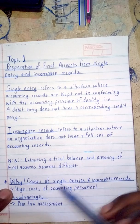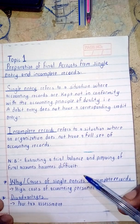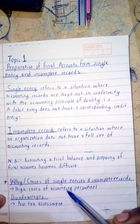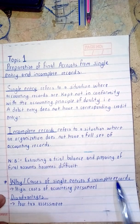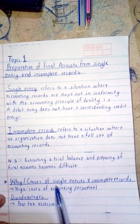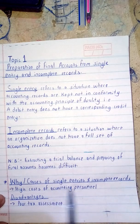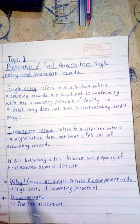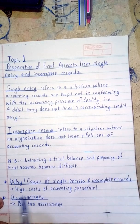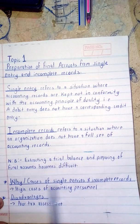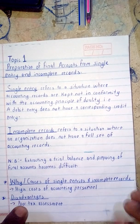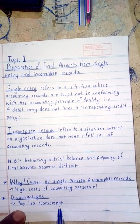Why might an organization or firm have single entries and incomplete records? One reason may be the high cost of accounting personnel. A disadvantage of having single entries and incomplete records is poor tax assessment.